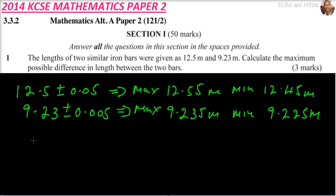Therefore, from there, the question is we are supposed to get the maximum difference. So the maximum difference is when we take the maximum of the first value, that is 12.55, and subtract the minimum value, that is the one that will give us the maximum difference. So we say maximum difference.